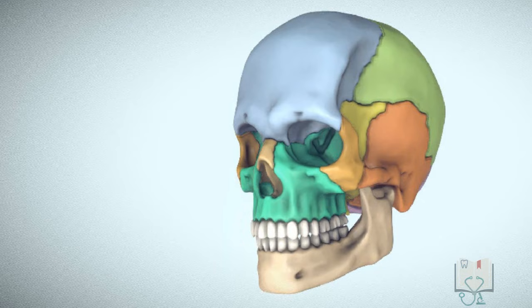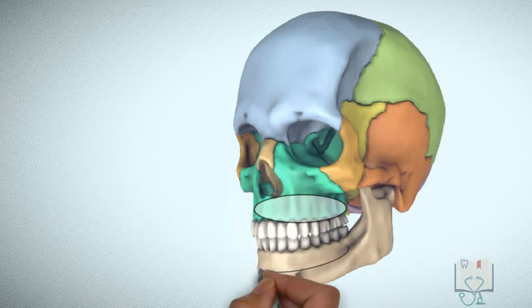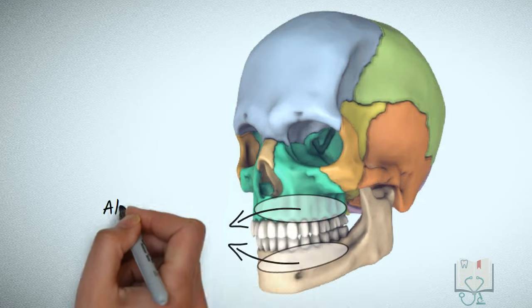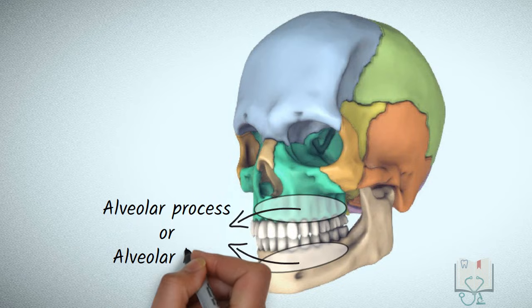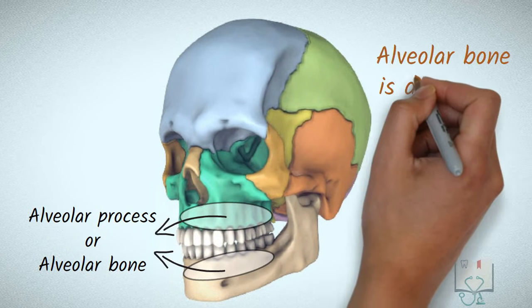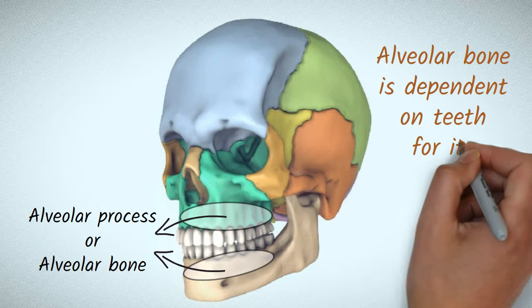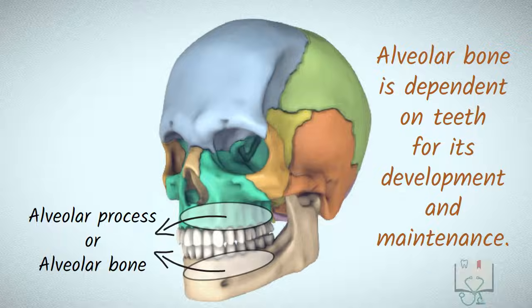Hence, the part of the maxilla and mandible that forms and supports the socket of teeth is known as alveolar process or alveolar bone. Alveolar bone is dependent on the tooth for its development and maintenance.